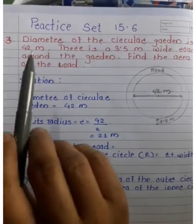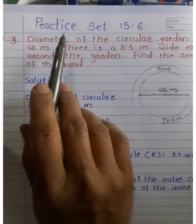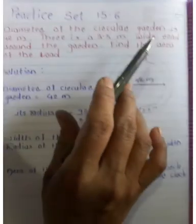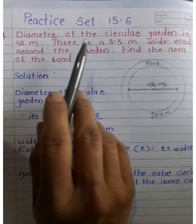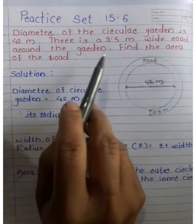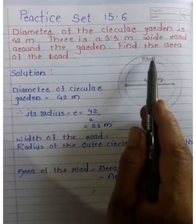Hello everyone, welcome back. Question number 3 from practice set 15.6: The diameter of a circular garden is 42 meters. There is a 3.5 meter wide road around the garden. Find the area of the road.